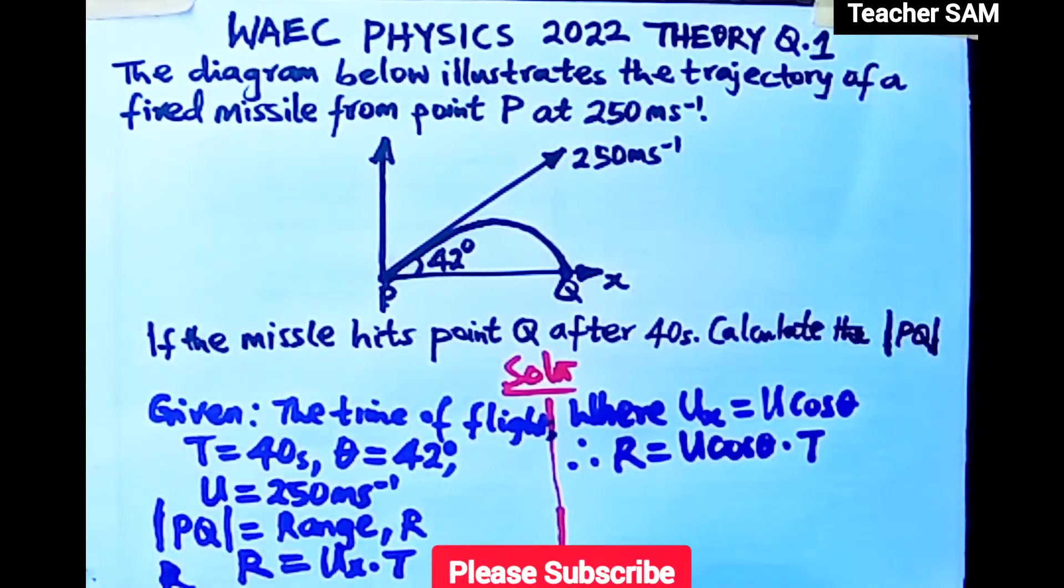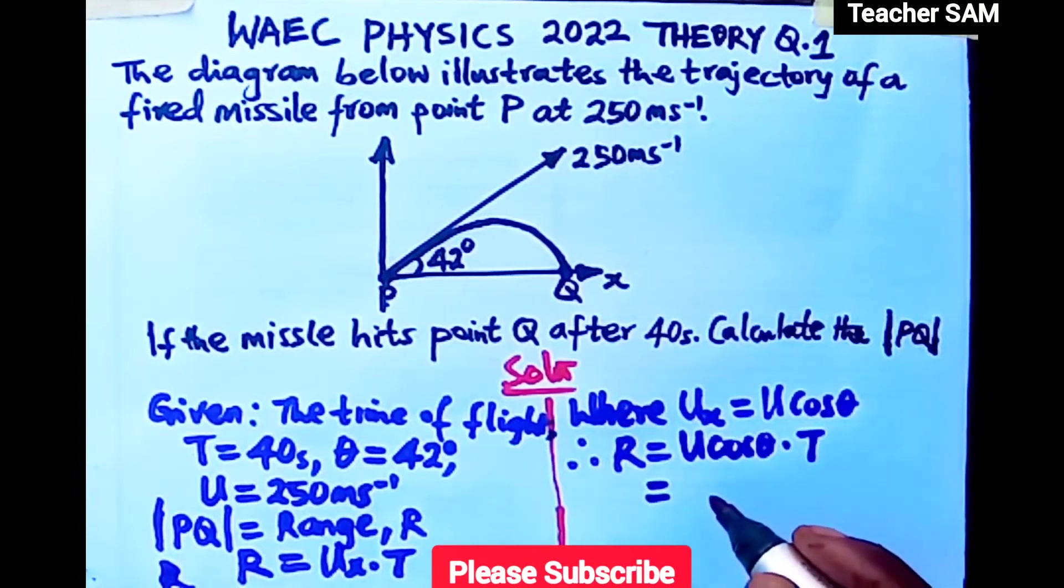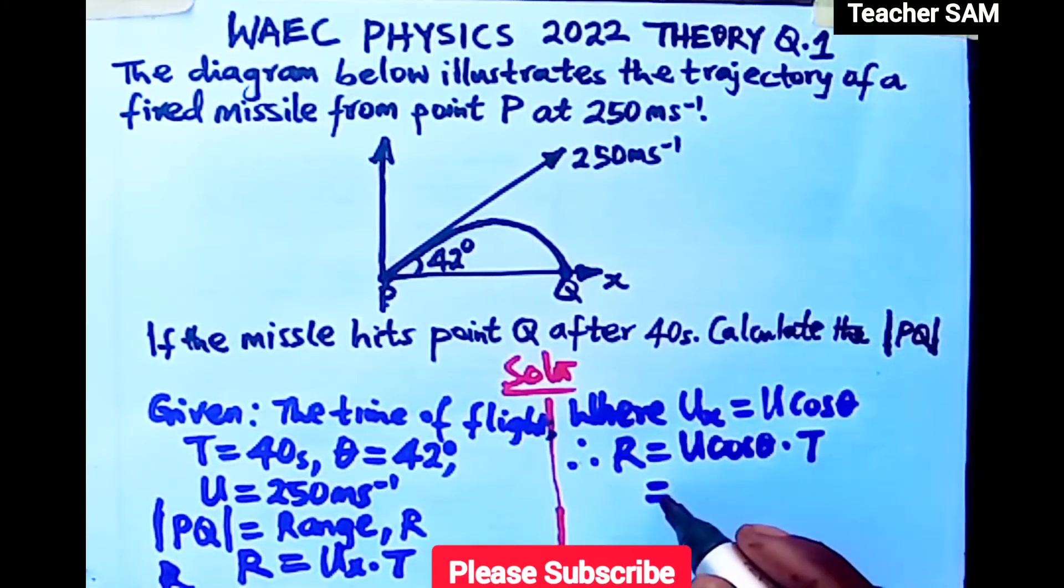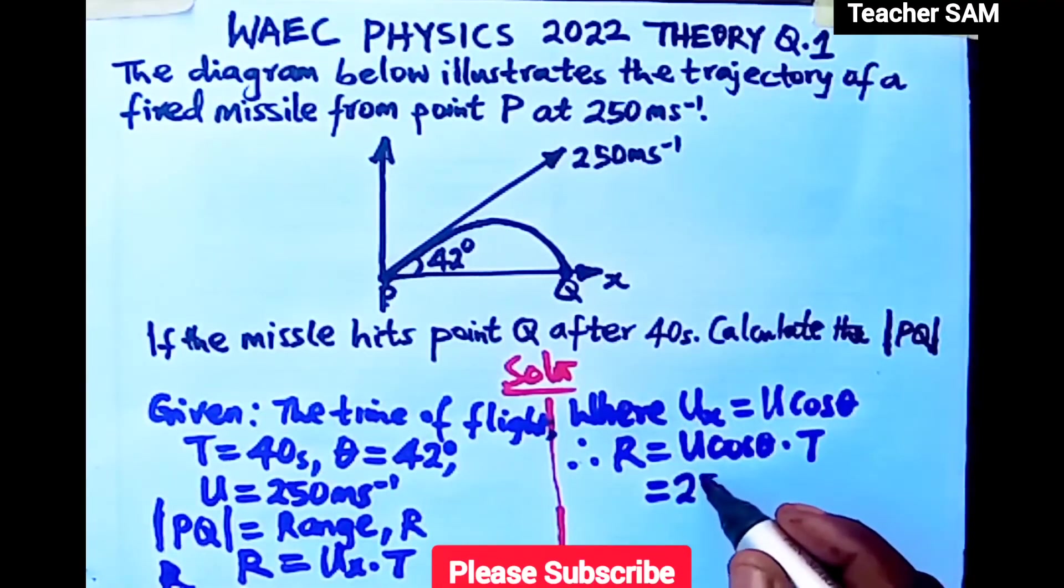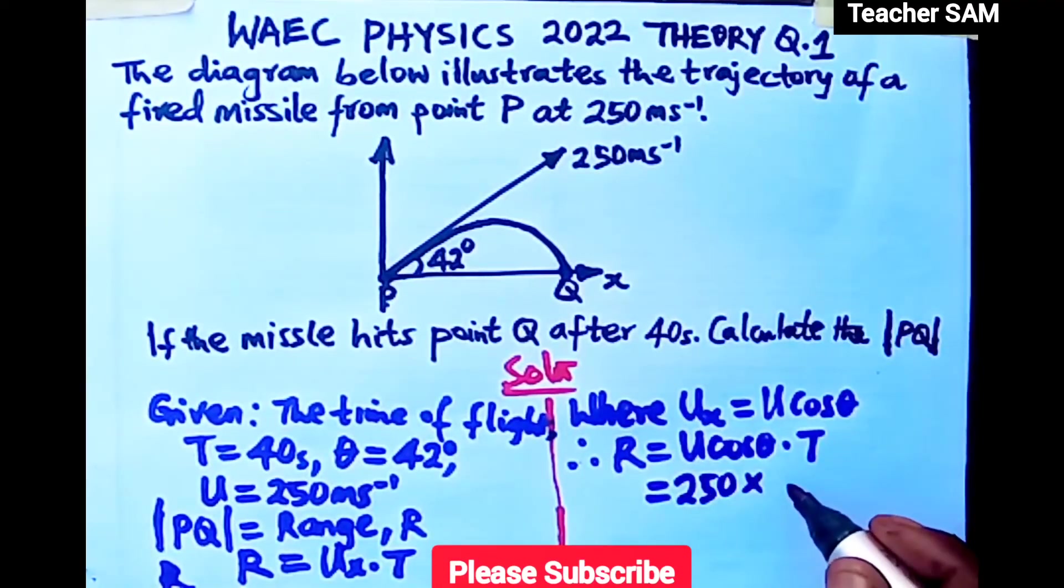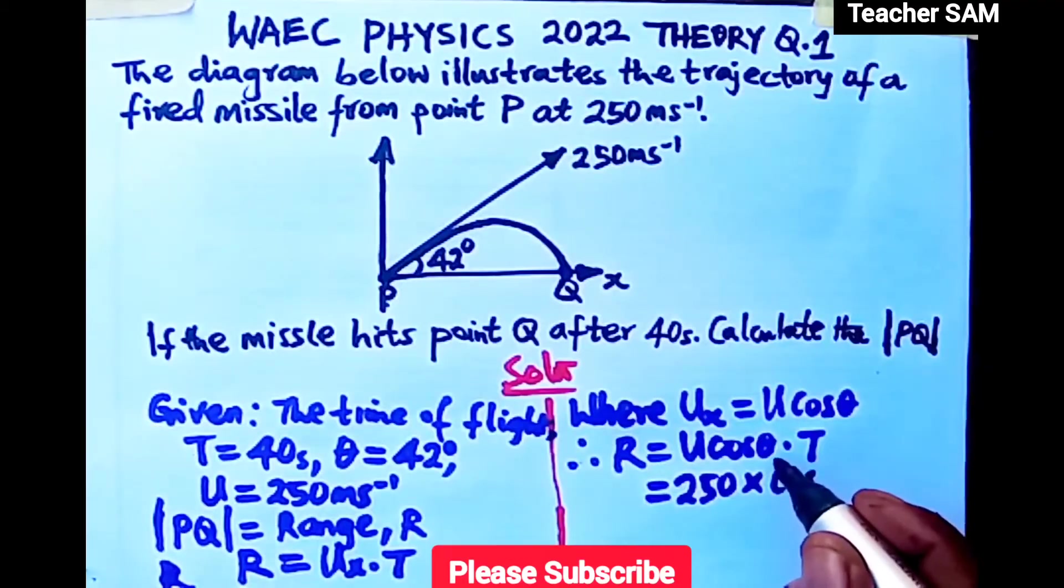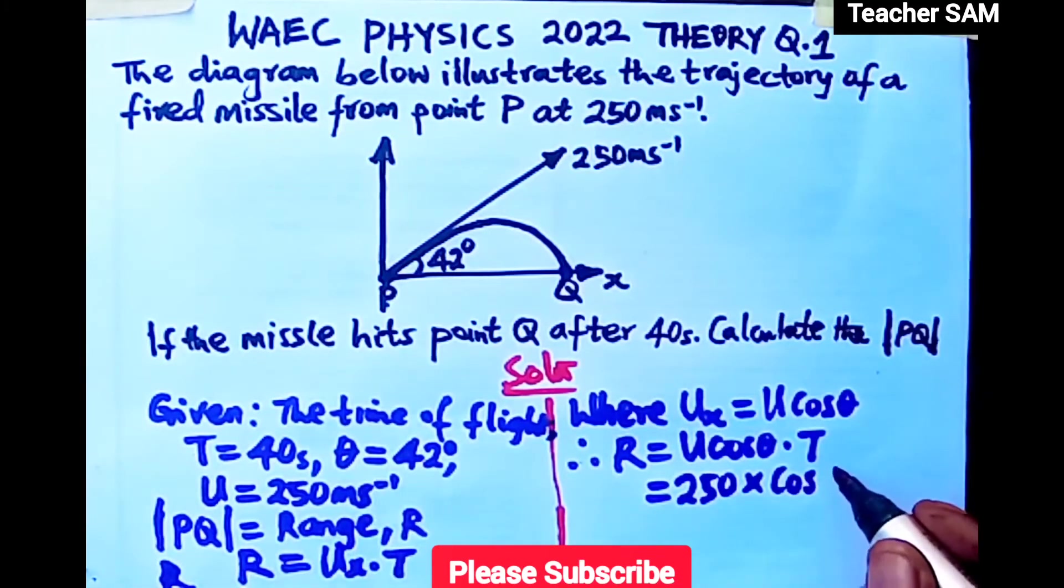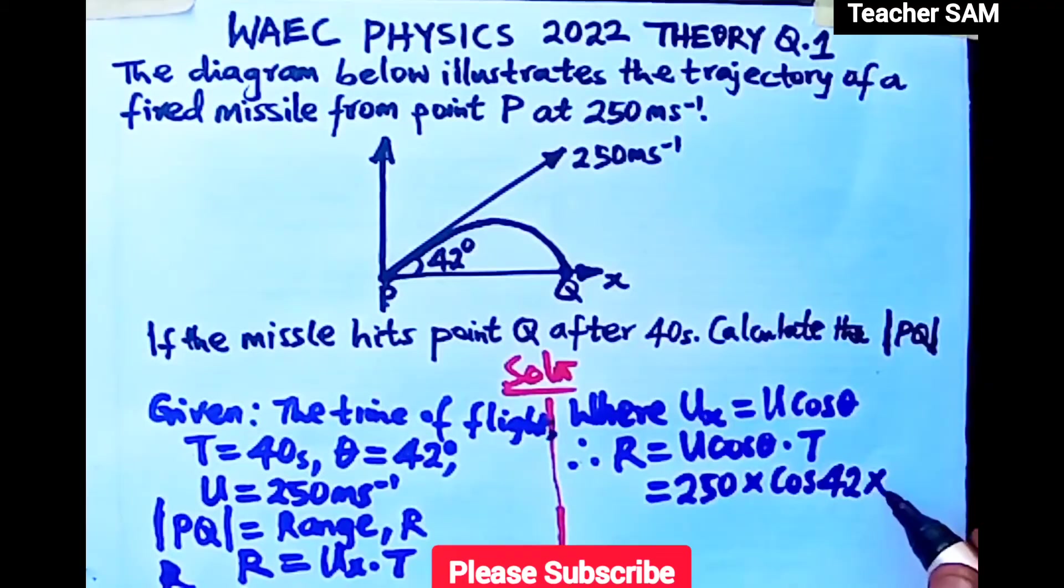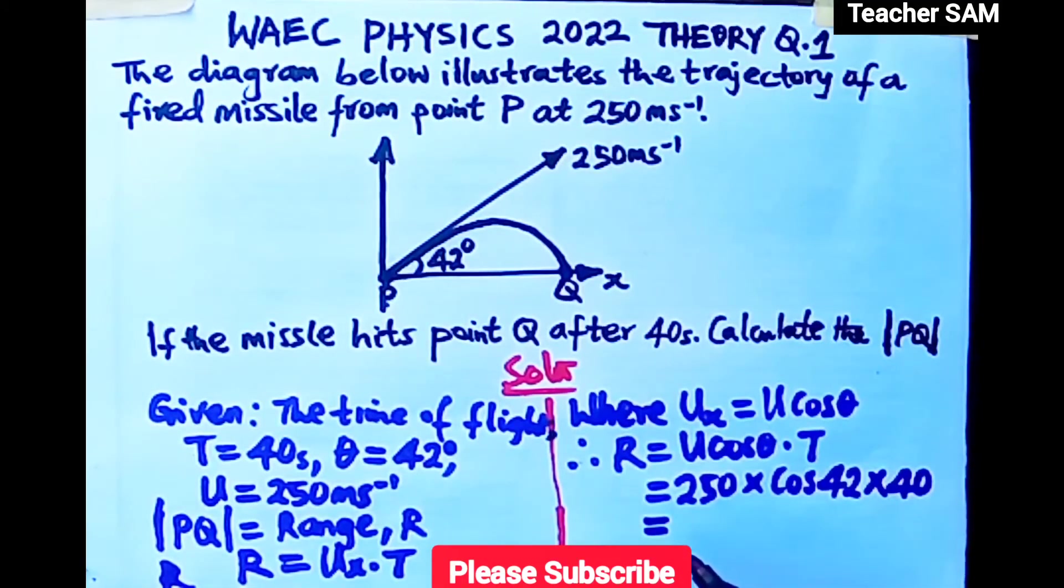We can substitute the values: U was given as 250, so that is 250 times cos theta. Theta is 42 degrees, so 250 times cos 42 times 40 seconds. When you multiply 250 times cos 42 degrees times 40, you get approximately 7431.45 meters to 2 decimal places.